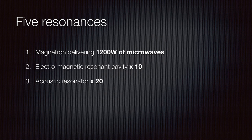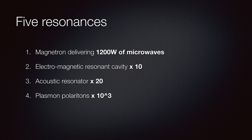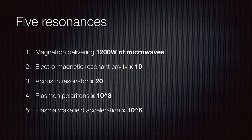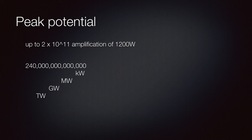The fourth resonance is plasmon polaritons, and this is one of the big ones. It can be very, very high from the literature, but he's giving it conservatively 10 to the power of 3 — that's a thousand times gain. The last resonance and the biggest is the plasma wakefield acceleration, and Dr. Eagley is saying that he believes this is able to give 10 to the power of 6 — that's a very large gain. If you add all these together, you're getting potentially up to 2 times 10 to the 11 amplification of your incoming power. That's 1200 watts times 200 billion — a very large number.